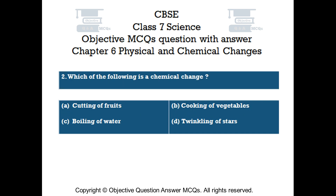Question number 2. Which of the following is a chemical change? Option A: Cutting of Fruits. Option B: Cooking of Vegetables. Option C: Boiling of Water. Option D: Twinkling of Stars.